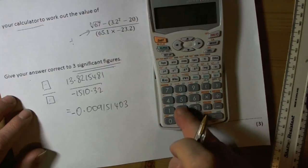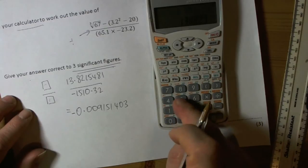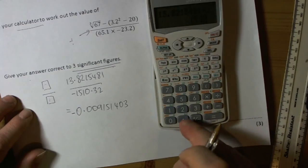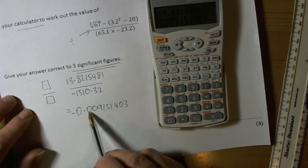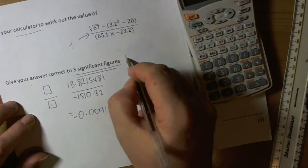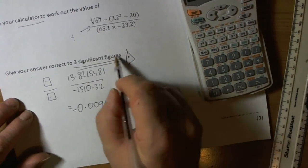I can do my double check here by just then doing 13.8215481 divide by -1510.32 equals, so -0.00915 blah blah blah. So just to double check there. I then remember that the question wanted the answer to three significant figures.